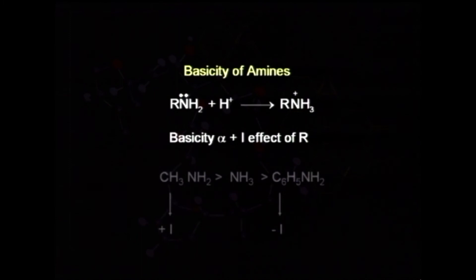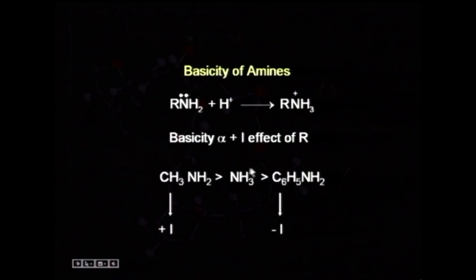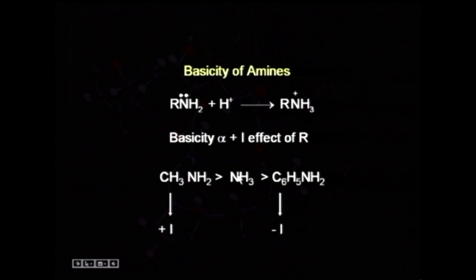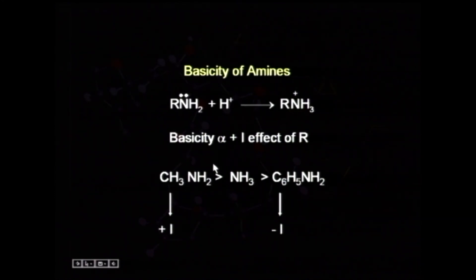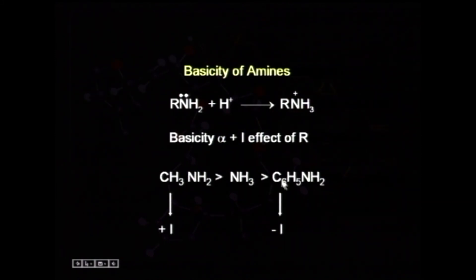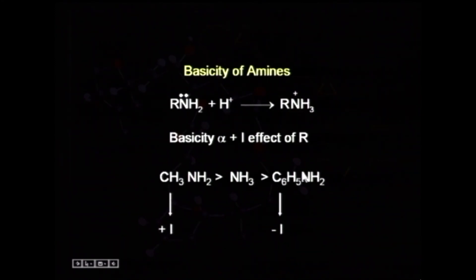In ammonia there is no substituent, so basicity relates only to the lone pair on nitrogen. When one hydrogen is substituted by a plus-I effect methyl group, it further pushes the electron pair towards nitrogen, so the lone pair is easily donated and basic character increases. However, a C₆H₅ (phenyl) group shows a minus-I effect — it attracts the lone pair of electrons on nitrogen, making it less available for donation. Hence aniline is the least basic among these three.